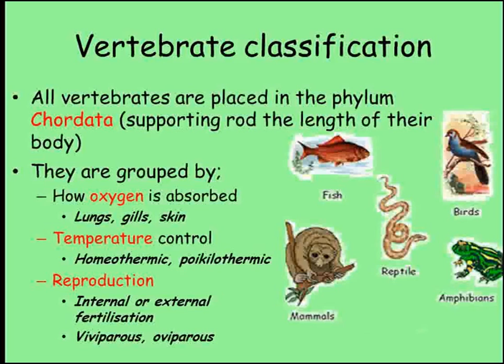Another area of variation between vertebrates is how their body temperature is controlled. Homeothermic animals, such as birds and mammals, control their body temperature and keep it constant. Oikolothermic animals, like fish, amphibians and reptiles, are not able to do this, and so they are the same temperature as their surroundings. Finally, the way animals reproduce also determines which group they are placed into. All vertebrates reproduce sexually, but fertilisation can take place internally — in mammals, birds and reptiles — or externally, in the case of amphibians. Mammals are viviparous, meaning they give birth to live young, and other vertebrates are oviparous, meaning they lay eggs.